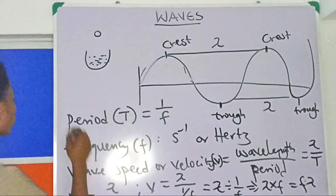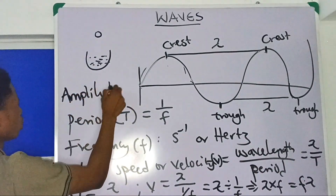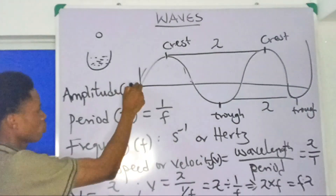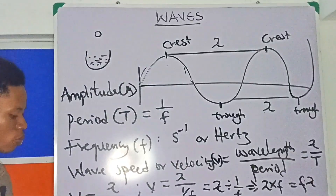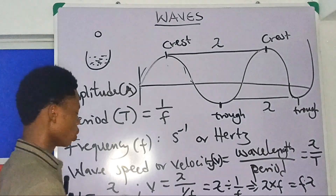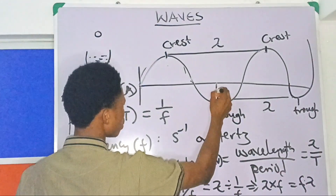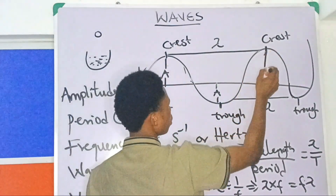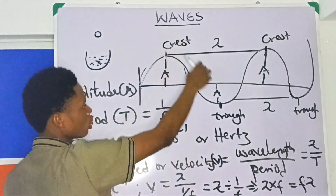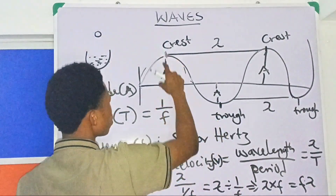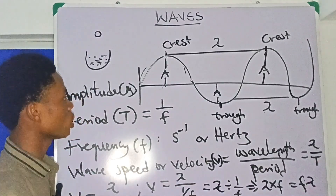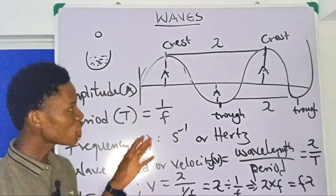Now I'll point out one more thing - amplitude. Amplitude is given as capital letter A. Amplitude is the maximum displacement of the particle of a wave from its mean or equilibrium position. The crest is the maximum displacement upward, and the trough is the maximum displacement downward. The maximum displacement is the amplitude.